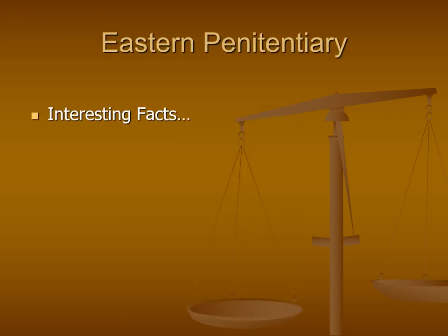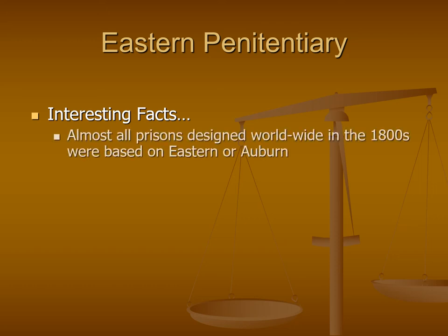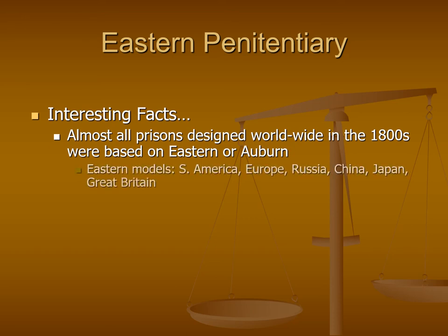Now let's take a look at some interesting facts about Eastern Penitentiary. Arguably one of the most important facts is the influence that prisons like Eastern — as well as Auburn — had on the world. As delegates and politicians from around the world visited America and took ideas back to their home countries, we saw the growth and proliferation of many prisons that mimicked and were modeled on what we saw at Eastern Penitentiary, with that large fortifying outer wall and the radial hub cell block design.